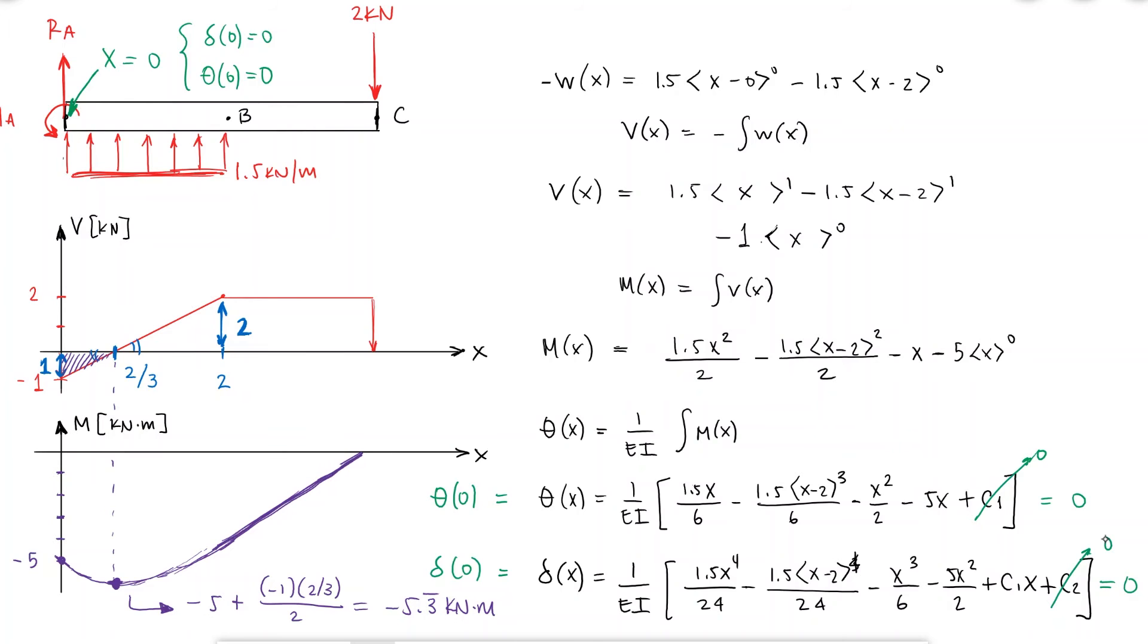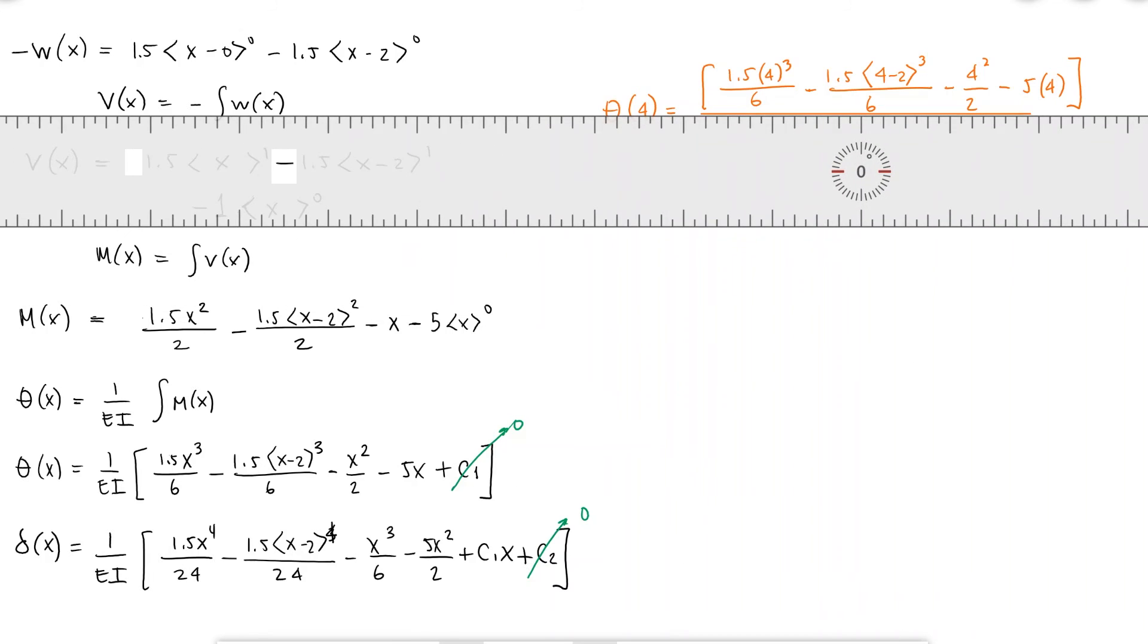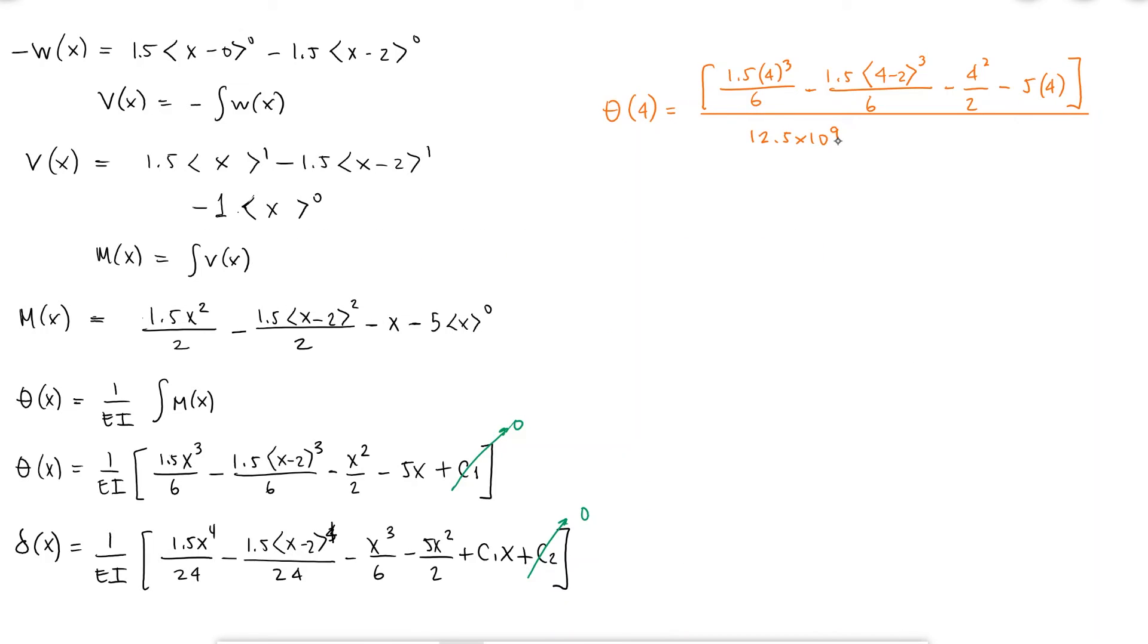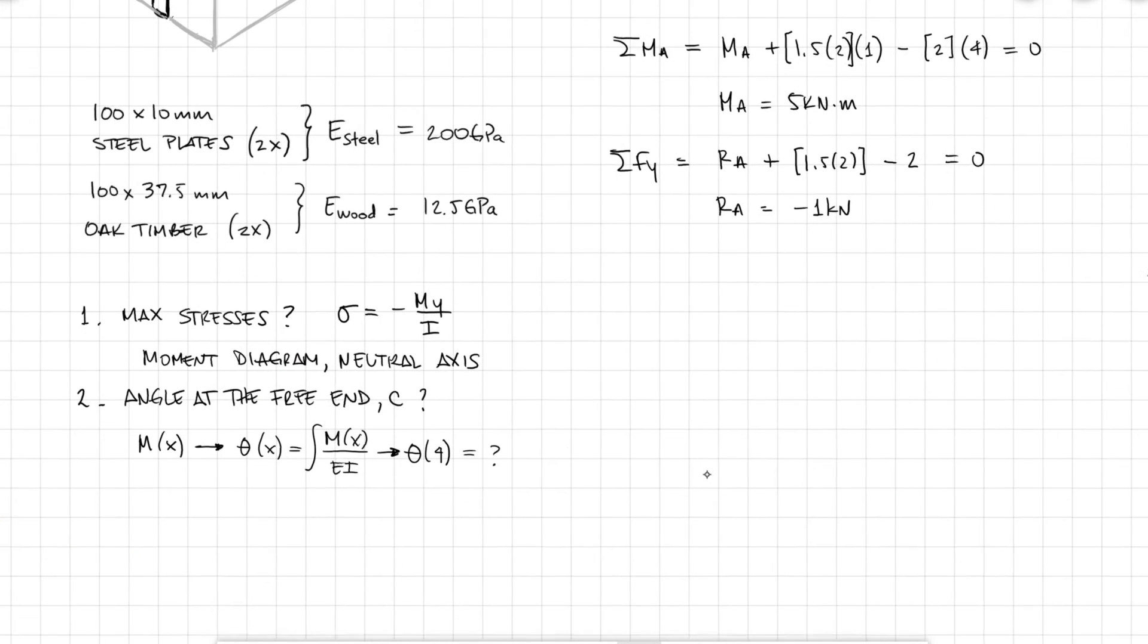So if I want to calculate the slope at the free end, which is theta for x equal to 4, I would use the elastic modulus of the transformed beam which is made of wood and the second moment of area I calculated earlier. This slope would result in minus 0.0082 radians. Going back to the stresses,